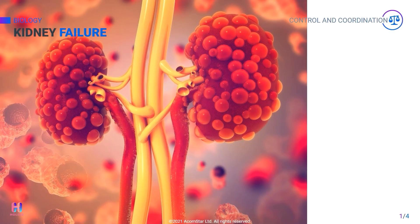Kidney failure. We have two kidneys, but we can live a normal life with just one kidney. But if both kidneys don't function properly, this will lead to a buildup of toxic substances in the blood and body, eventually leading to death. Kidney failure can occur due to an infection or injury.